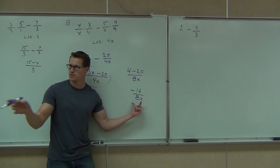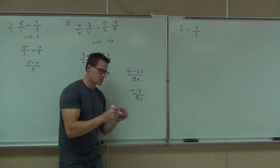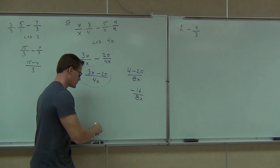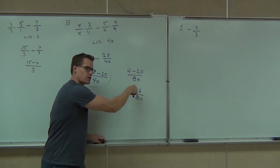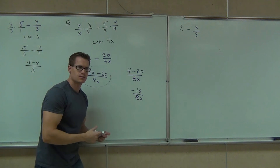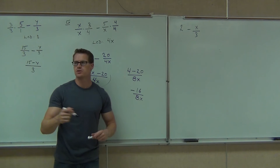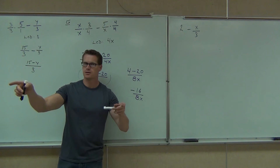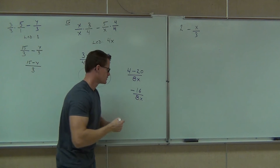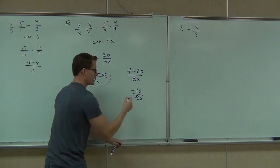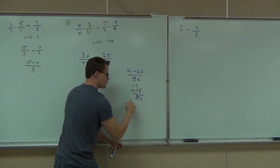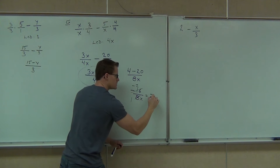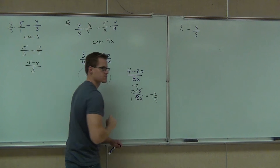Is this answering your question? In this case, you go: what number goes into both negative 16 and 8? 8. 8 goes into negative 16, negative 2 times. 8 goes into 8 one time. Your answer is negative 2 over x.